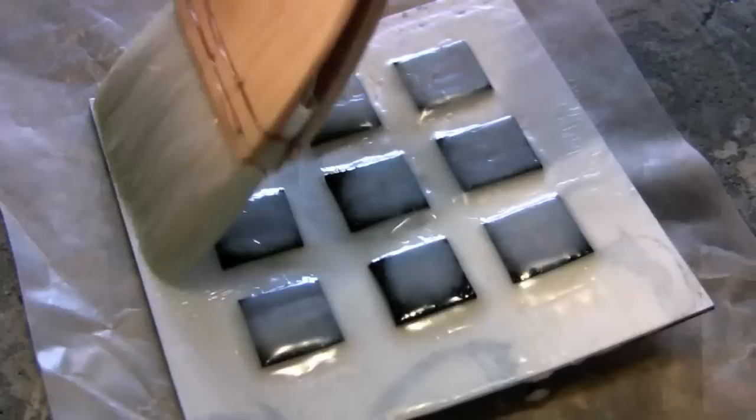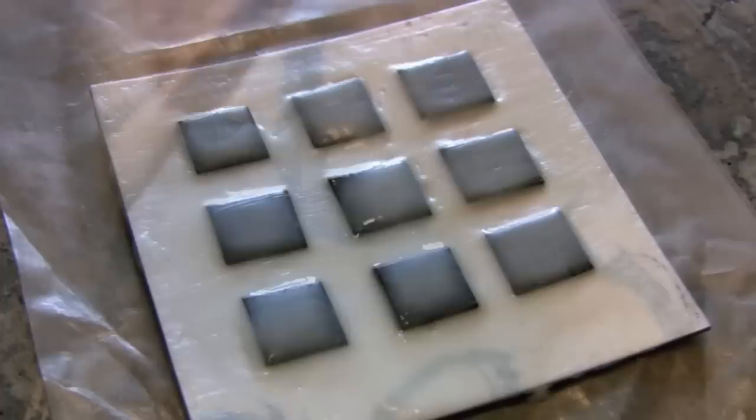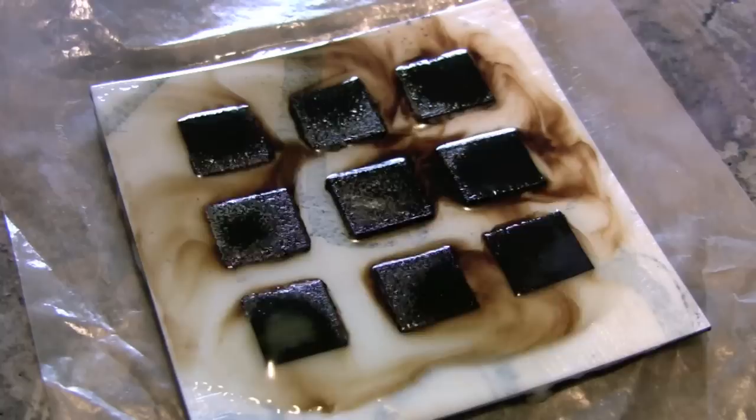And then now you can see I'm covering it with numerous layers of wax. Now normally with encaustic, as you know, you would fuse each layer before you add the next, but what I'm doing here is really saturating and creating a lot of wax for this effect.